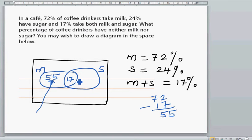Now from the 24% who take sugar, you've already got 17, so you have 24 take away 17, which is 7% here.